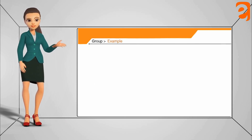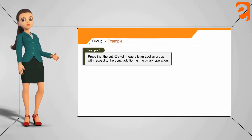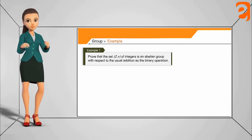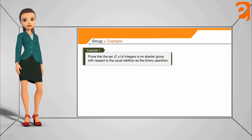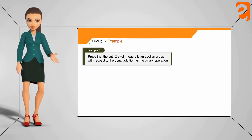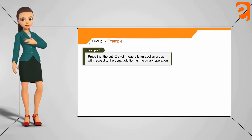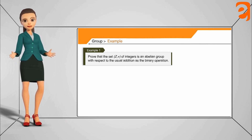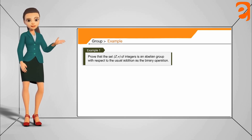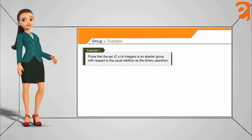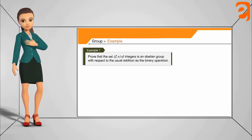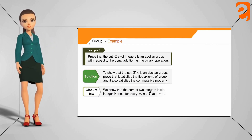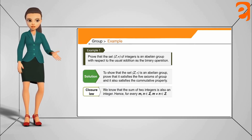Now let's consider examples of groups. The first example is the set Z of integers with the binary operation of addition. We will show that Z with addition is an abelian group by verifying that it satisfies the four axioms for a group and then showing commutativity.